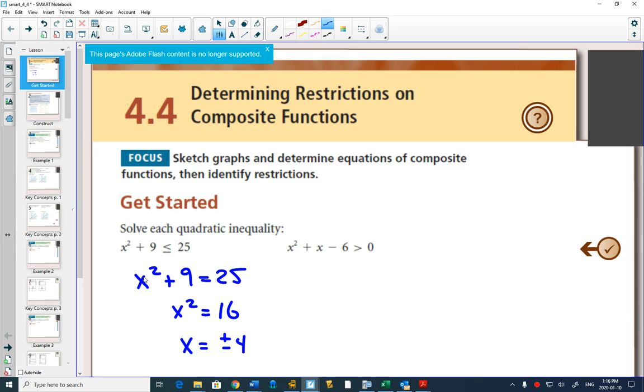Who wants to be the first volunteer to say one that either works or doesn't work? When plugging in things, I would say choose numbers for x that are easy rather than hard. Don't start off with 35.87 and try to square that in your head. Maybe start off with 0 or 1. What happens if you plug in 0? Does 0 make this true? Yes.